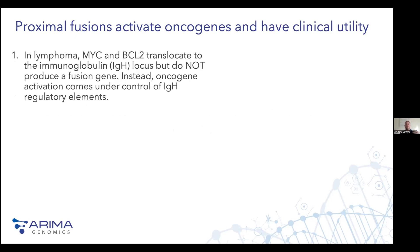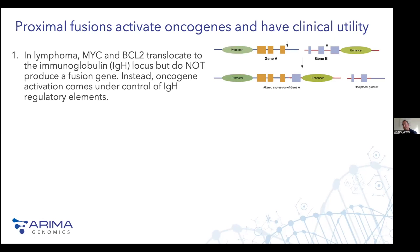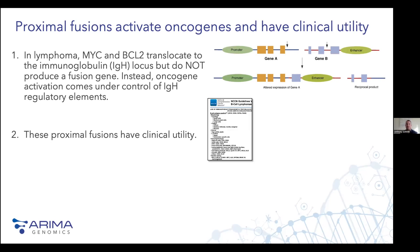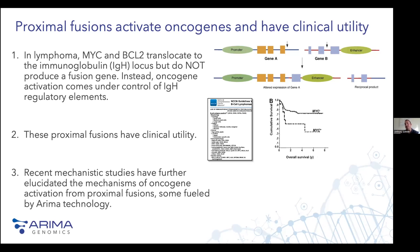A poster child for that statement is in lymphoma: MYC and BCL2 translocate to the IGH locus, a transcriptionally active locus in B cells. This does not produce a fusion gene like a MYC or BCL2 fusion gene — that oncogene often becomes activated through mechanisms like enhancer hijacking. This has been shown for decades. Importantly, these types of fusions have clinical utility: in the NCCN guidelines for lymphoma, testing for these proximal fusions is essential in certain circumstances and can stratify patient outcome.